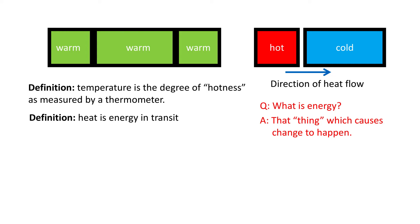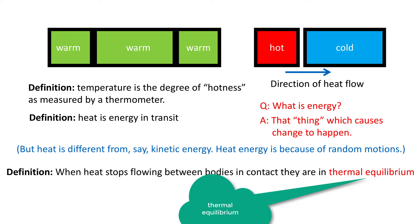We will even talk about dark energy, that which makes the universe expand faster. But heat is different from other forms of energy like kinetic energy. Heat energy is that which comes from random motions—molecules, atoms, photons, neutrinos—all of them. If they move randomly, that leads to heat energy.